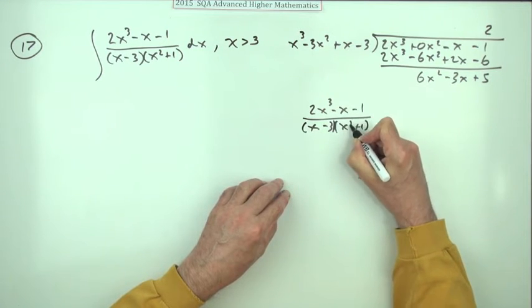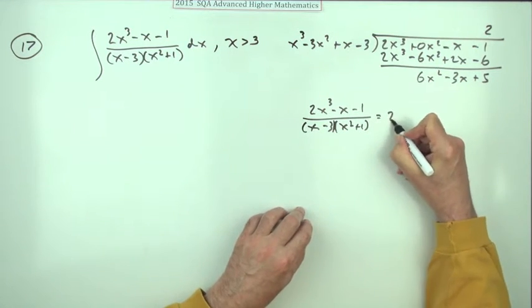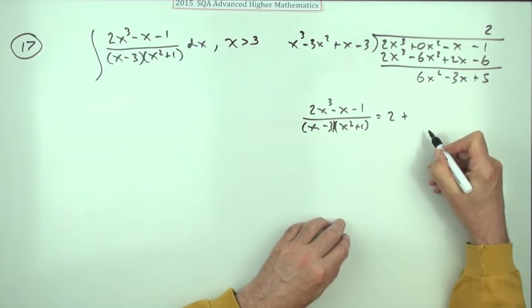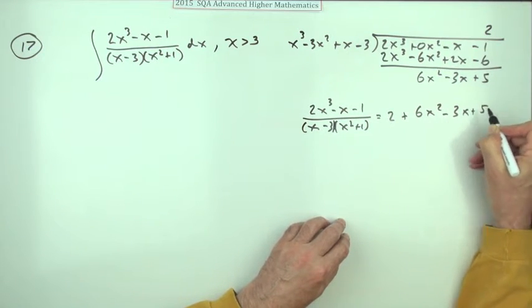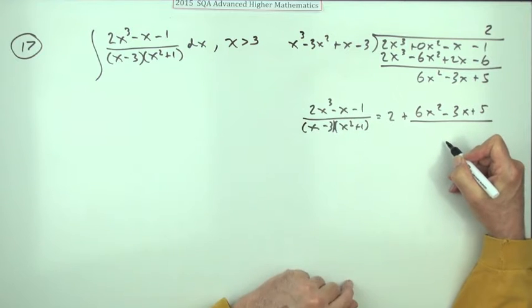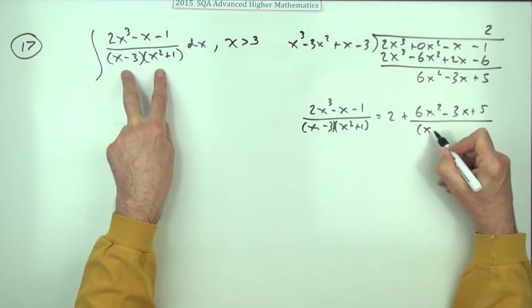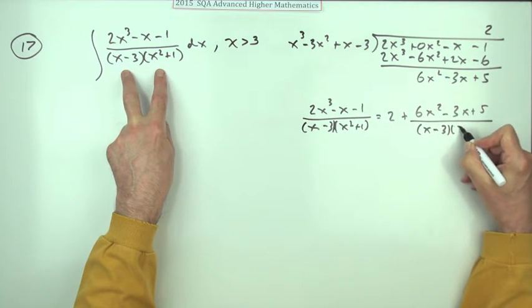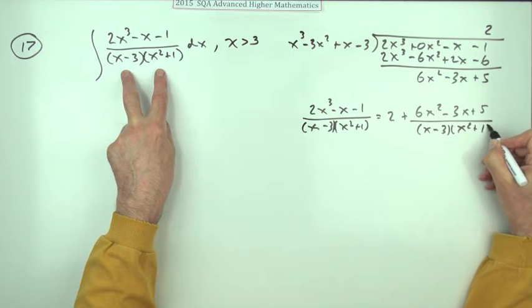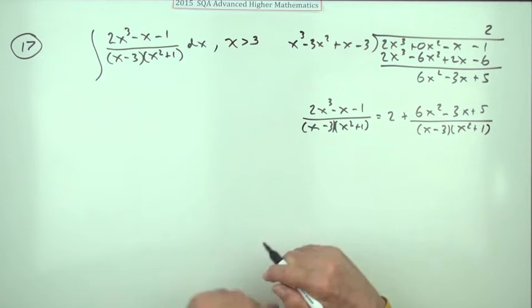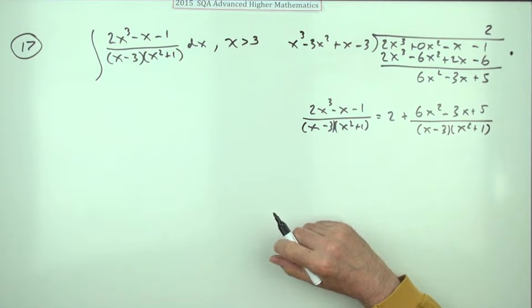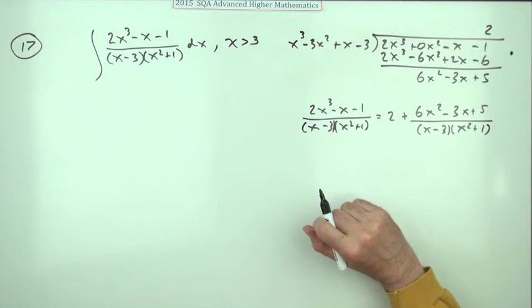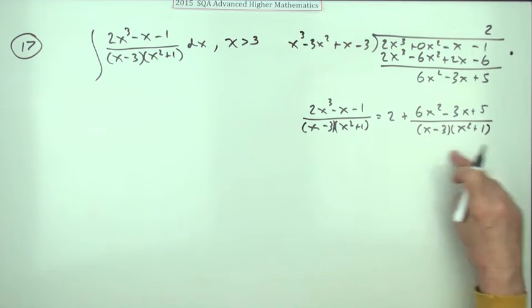That equals 2 plus this thing: 2 + (6x² - 3x + 5) over (x - 3)(x² + 1). There's the first two marks. The first mark was for knowing to divide and dividing, and the second mark was for expressing the result of that division. The part that needs resolving into partial fractions is this part.